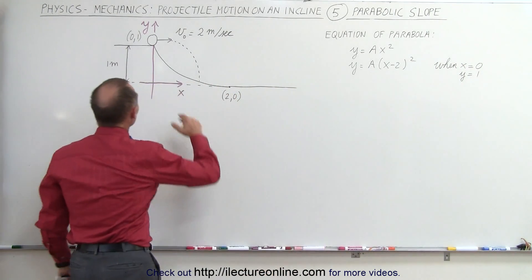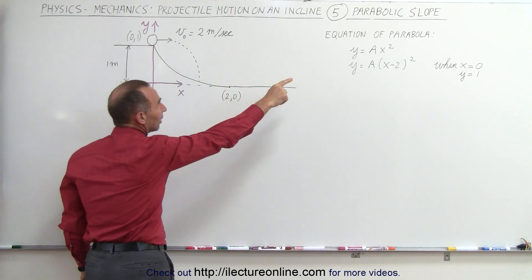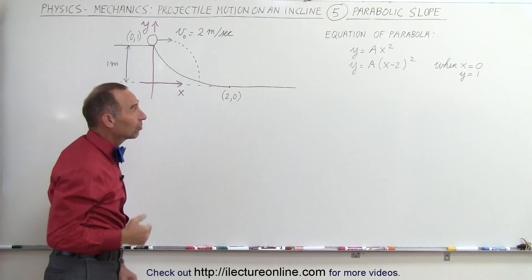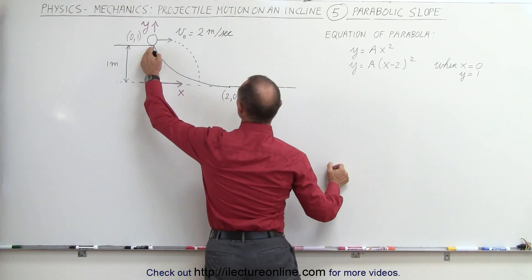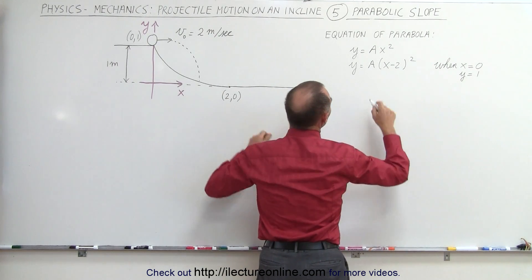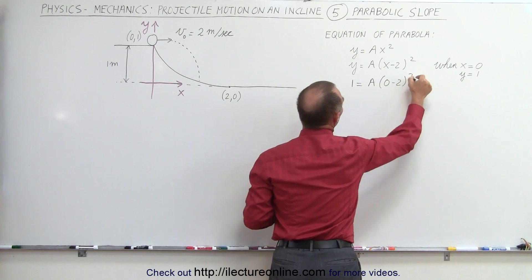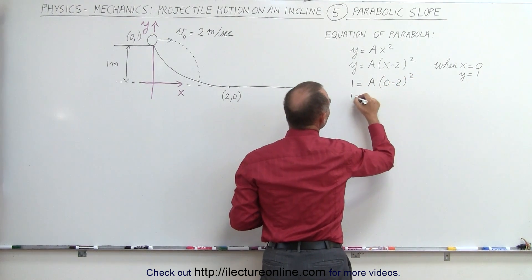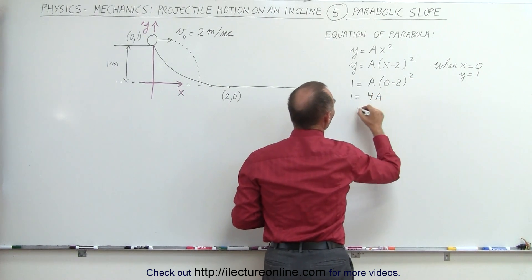Now we realize here that since this incline here is one meter high at this location, we can solve then for a, for the constant a, by realizing that when x is equal to zero, y is equal to one. Plugging that into our equation here, we can see that 1 equals a times (0 minus 2) squared or 1 equals four times a. And then finally, a is equal to one fourth.